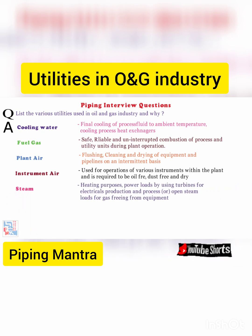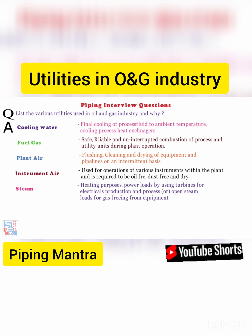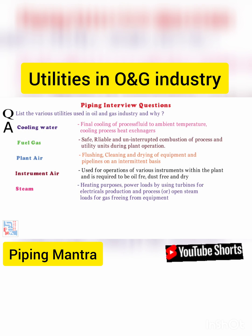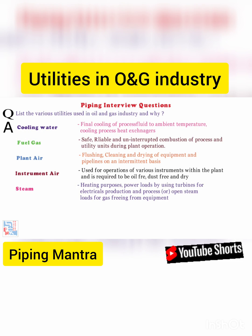5. Steam Systems: The steam system is for heating purposes, power loads by using turbines for electrical production, and process or open steam loads for gas freeing from equipment.